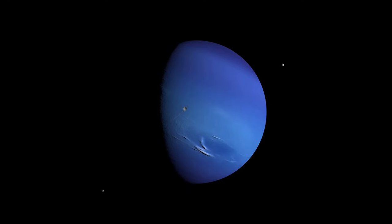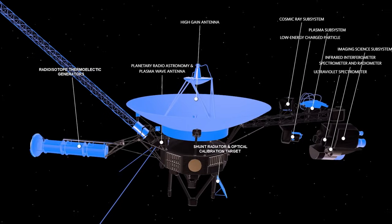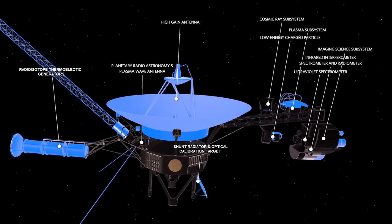The heliosphere could be spherical due to interstellar medium pressure, but it's also possible it has a comet-like tail or a glass-like shape. Unfortunately, current spacecraft won't provide answers.